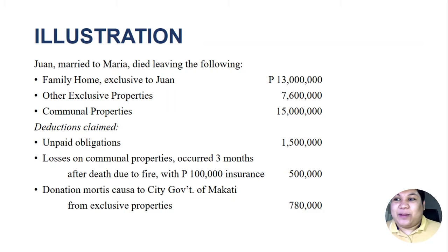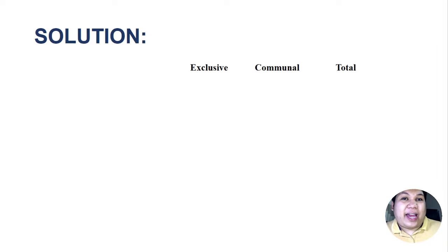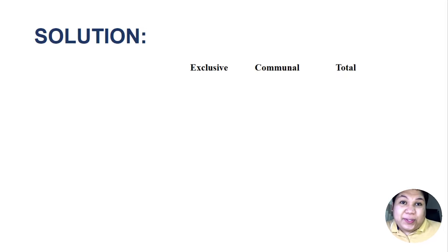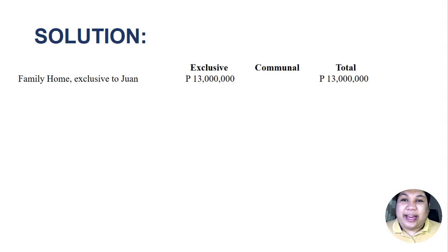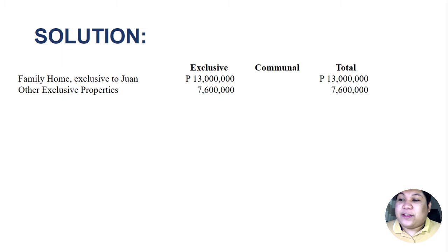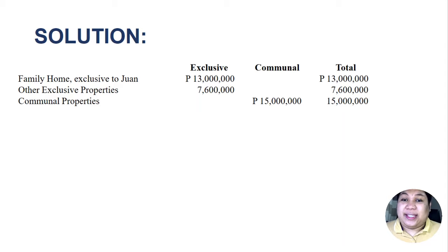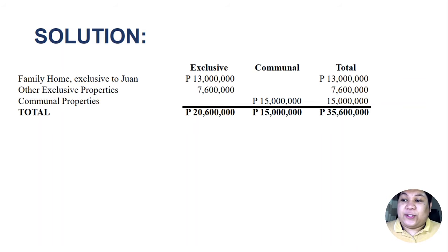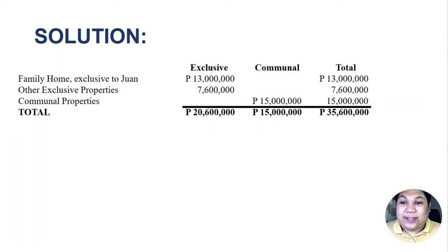Here's the solution. To solve this, we will use three columns: one column for exclusive, one for communal, and one for the total. This helps in classifying whether properties are exclusive or communal. The family home is exclusive to Juan — 13 million under exclusive. Other exclusive properties: 7.6 million. Communal properties: 15 million under communal. Therefore, the total gross estate is 20,600,000 under exclusive and 15 million under communal, for a total of 35,600,000.